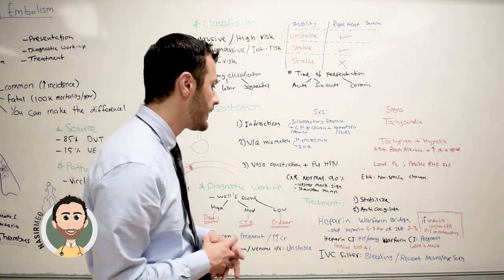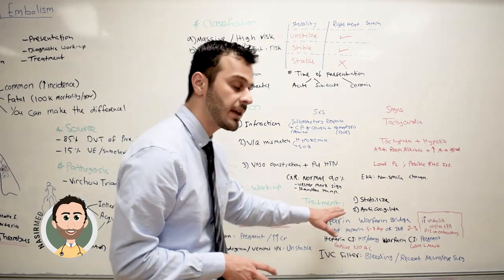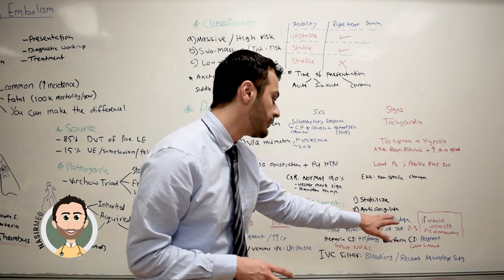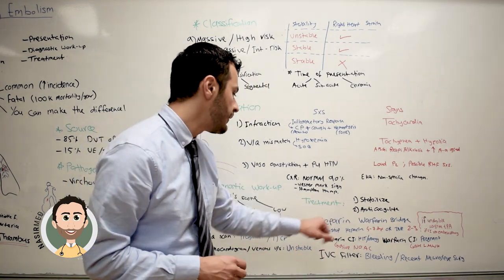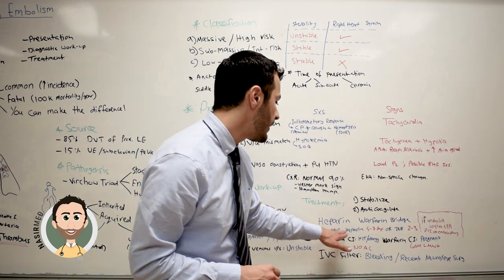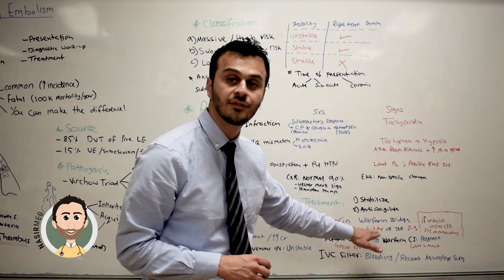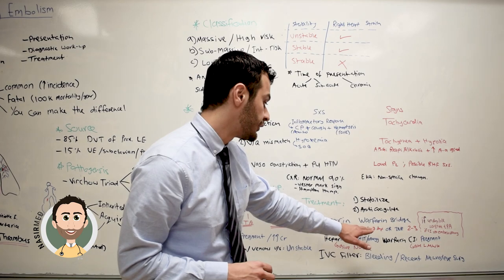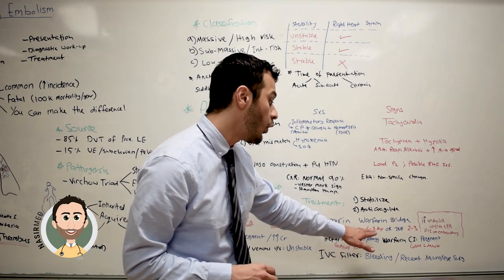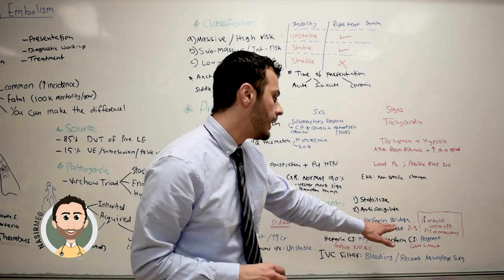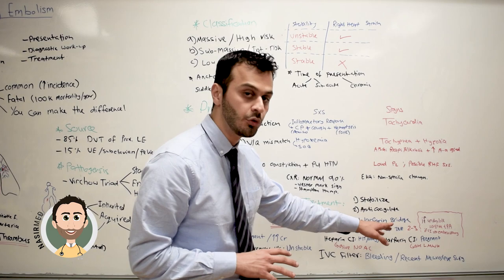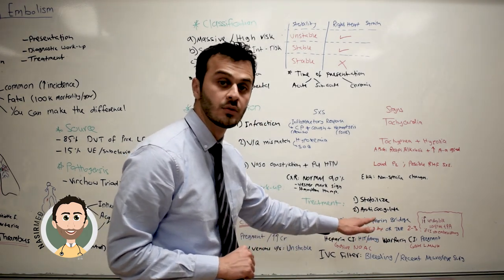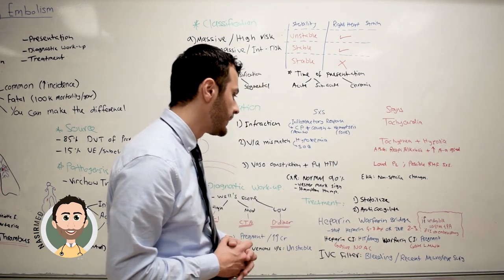After that, you go ahead and start anticoagulation therapy. The main therapy is heparin and warfarin bridge — you start both of them, then stop heparin five to seven days after initiation or when the INR becomes two to three, whichever is longer.